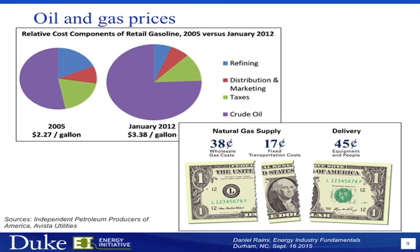For natural gas, the cost of the fuel is actually substantially less than for most petroleum-based products. Looking at an example from a utility in the southwest, you can see that the wholesale gas cost is actually only about four-tenths of the total price that a consumer will pay. The larger costs are fixed transportation costs like pipelines, as well as equipment and people at the utilities that manage the processing, distribution, and marketing of the gas.